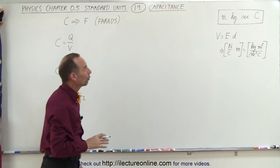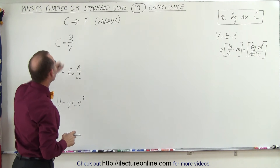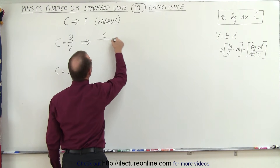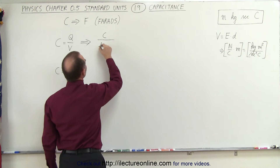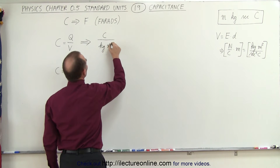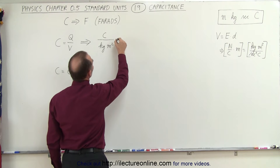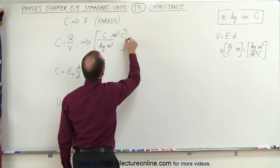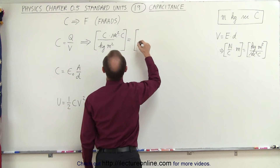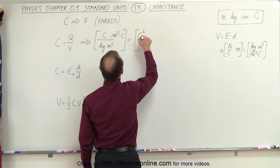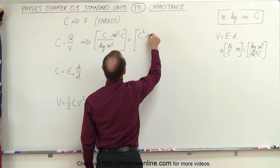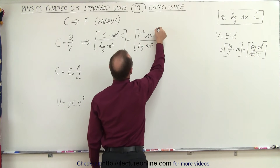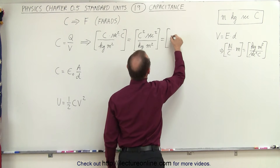So those are the basic units for voltage. Looking at the equation for capacitance, the basic unit is charge — coulombs — divided by voltage, which is kilograms times meters squared divided by seconds squared times coulombs. The coulombs move to the numerator, giving seconds squared times coulombs squared. Combining everything, the basic units for capacitance are coulombs squared times seconds squared divided by kilograms times meters squared.